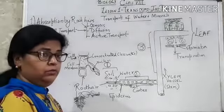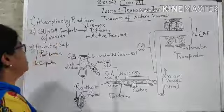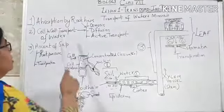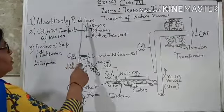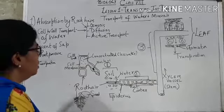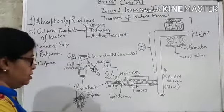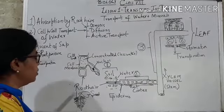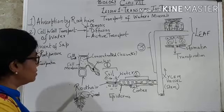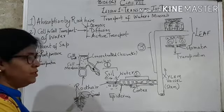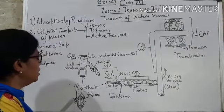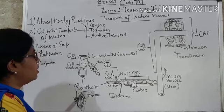This process takes place with the help of three steps. The first step is absorption by root hairs. Now what are root hairs? If you have ever seen seeds germinating, you will find that the tiny seedling has a main root and many tiny hair-like structures going out. These hair-like structures are called root hairs.